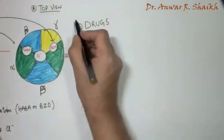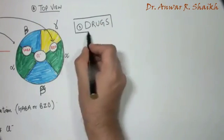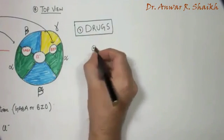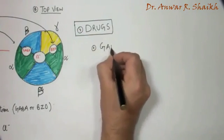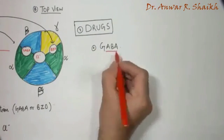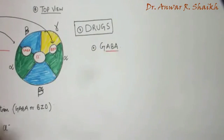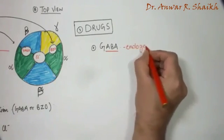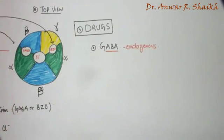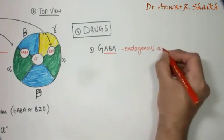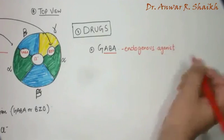Let's see some drugs which act on the GABA receptor. The first of all is the gamma amino butyric acid or GABA. This drug is basically an endogenous agonist of the GABA receptor and it is released at various sites in the CNS and acts on the GABA site and causes a sequence of events.